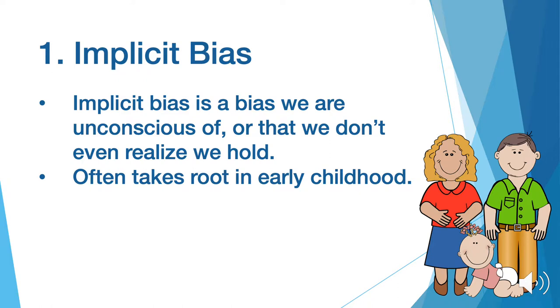The first type of bias is implicit bias. Implicit bias is a bias that we are unconscious of, or that we don't even realize we hold. It often starts in early childhood due to the influence your parents and surroundings have on your upbringing.